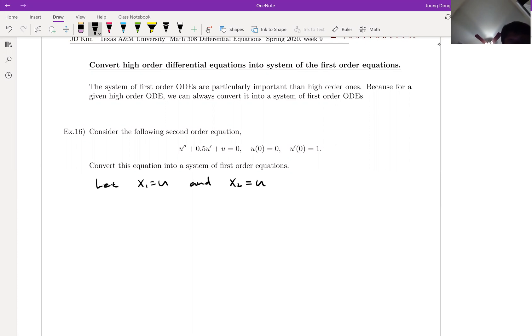Let x1 = u and x2 = u prime. Then since x1 is u, x2 is x1 prime, that's obvious right? Since we're in second order, we have to write the second order in terms of x1 or x2.